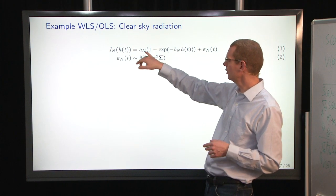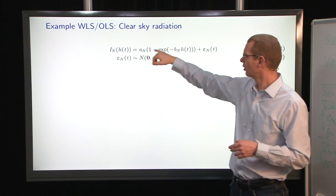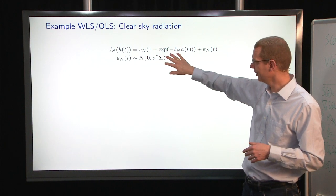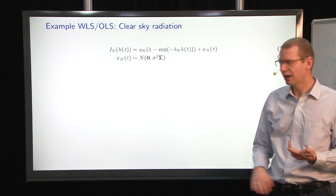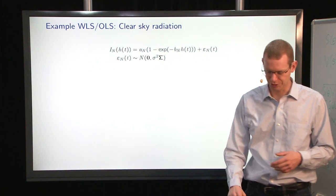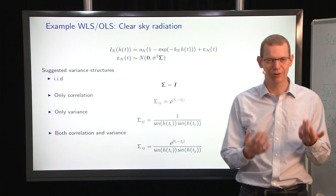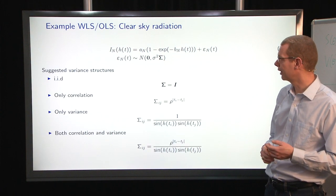So this is the relationship that is expected. It's similar to what we looked at before. We have a saturation here going to some level. And then the interesting part is how to pick the variance structure here for the weighted least squares estimator.